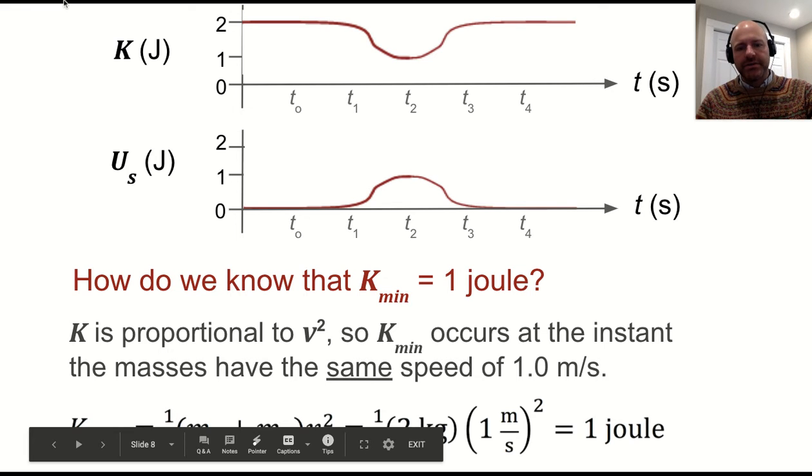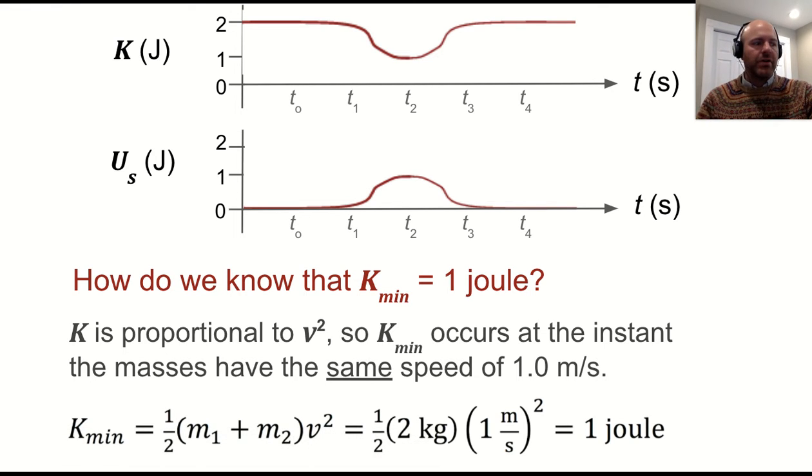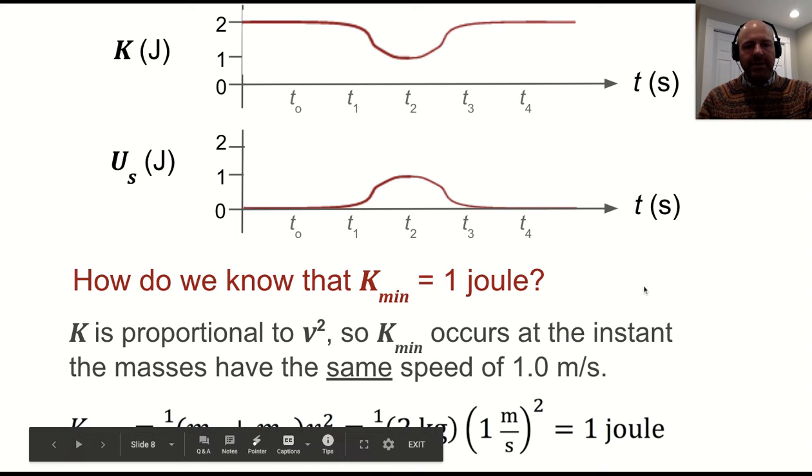And we can plug in those values. We find out how fast they're going by doing basically a conservation of momentum problem where they stick together briefly, and you end up with one joule.